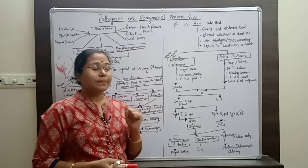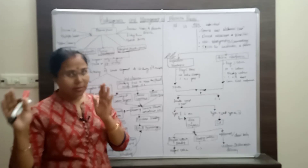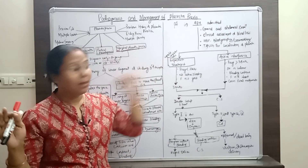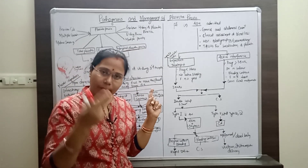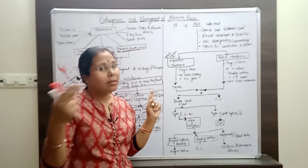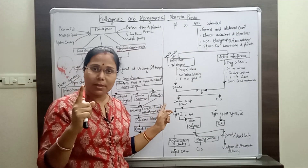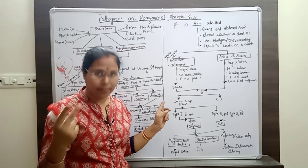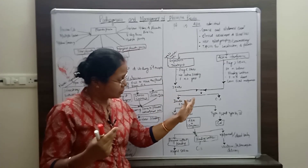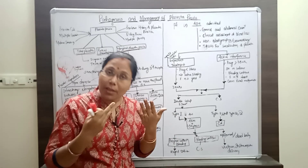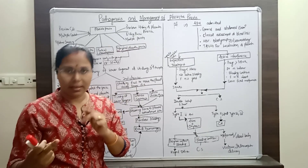The double set of examination is carried out in the operation theater, because the patient has placenta previa. Two management teams are present: if during the internal examination severe bleeding occurs, one management team controls the bleeding and manages the blood loss. If the situation is not under control, we immediately proceed to cesarean section. That is called the double set of examination.